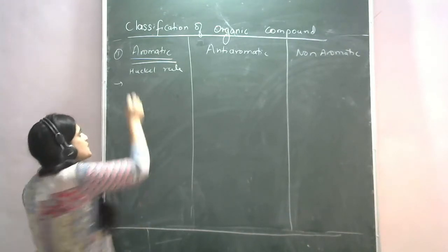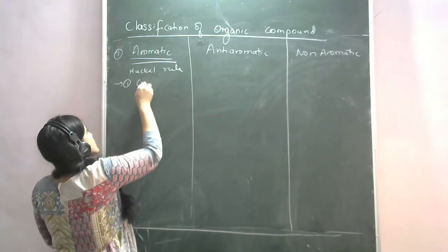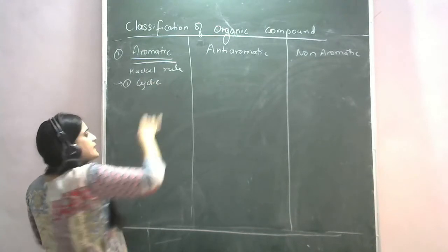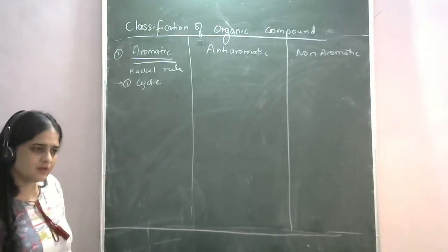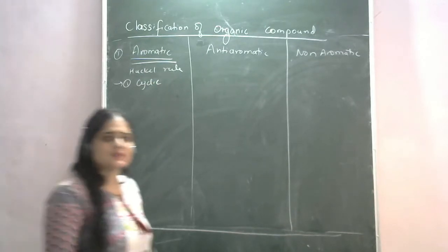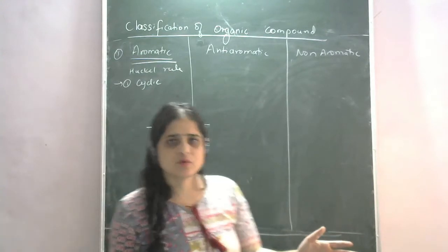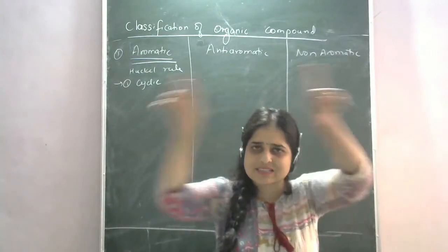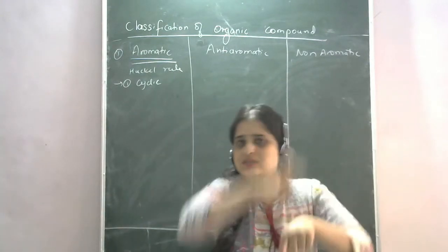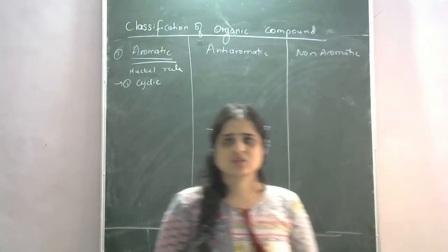The first condition is to be cyclic. What is cyclic? As we saw in the previous lecture — if the first and last carbon form a bond, it becomes a cyclic ring-like structure. That is the cyclic structure.